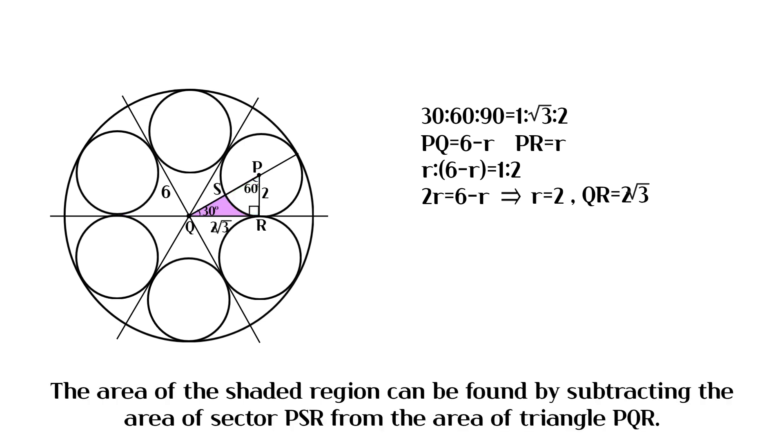The area of the shaded region can be found by subtracting the area of sector PSR from the area of triangle PQR.